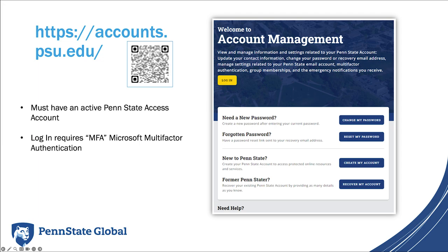You cannot access Account Management without an active access account. Also, the Microsoft Multi-Factor Authentication, or MFA, must be available for you to use. Pay attention to the yellow buttons and reminders in this video — the Account Management System uses yellow buttons to guide you. Always seek help within the system you are going to use. International Student and Scholar Advising is not responsible for the Penn State Account Management System and we are not the best resource to help you troubleshoot. Please use the helpful tips from Account Management when you need it.